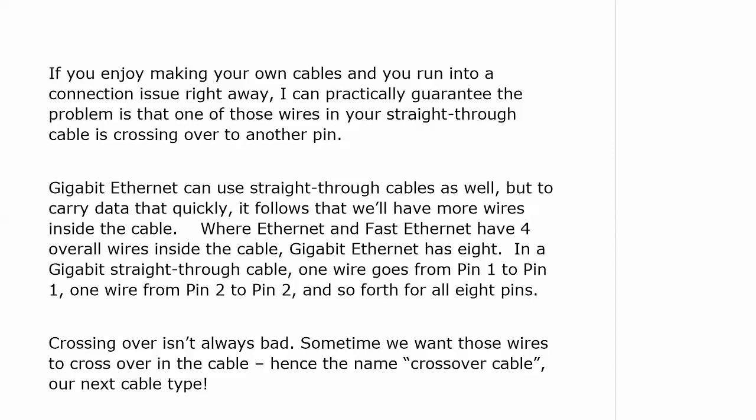Gigabit Ethernet can use straight-through cables as well, but to carry that data it does need some more wires. Where Ethernet and Fast Ethernet have four wires inside the cable, Gig has eight. In a Gig straight-through cable, one wire goes from pin 1 to pin 1, one wire from pin 2 to pin 2, and so forth for all eight pins. Now, crossing over is not all bad — as long as you are trying to make a crossover cable, not a straight-through cable.